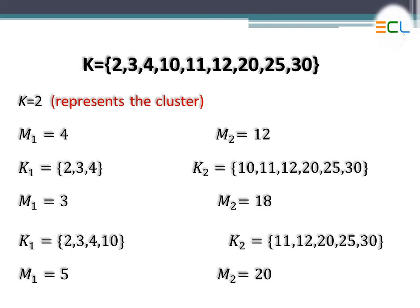Now let's start with the example of k-mean clustering. We have the data: 2, 3, 4, 10, 11, 12, 20, 25, and 30. Here we have already defined the random value of k equal to 2, which means we want to make two clusters. Since k equals 2, we select two random values as mean values from the dataset. I have selected m1 equal to 4 and m2 equal to 12, which are random choices. You could also select 10 as m1 or 30 as m2 - it depends on you.